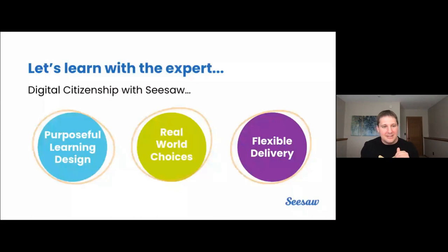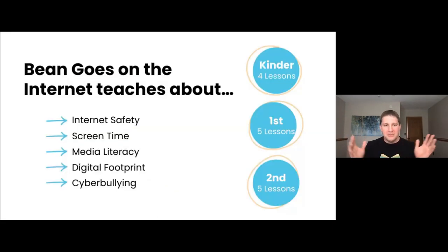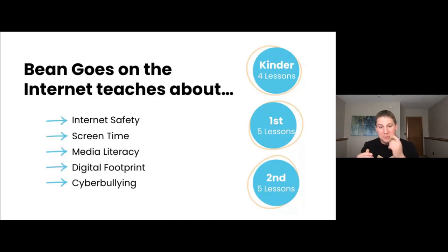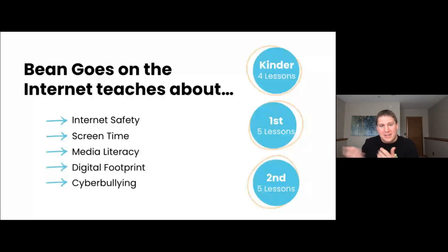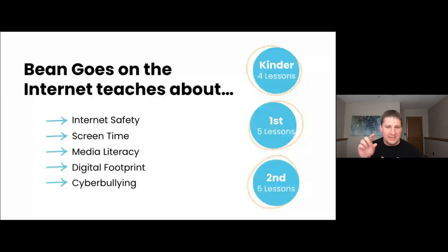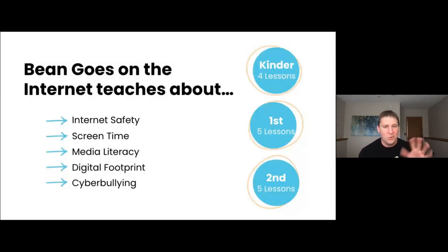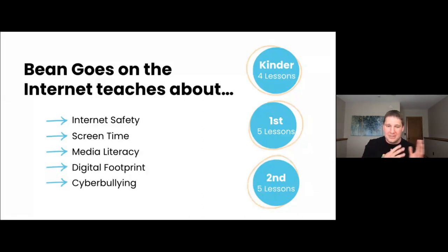Before we jump into looking exactly at the lessons, I want to give you a picture of what the whole scope is for this collection. Bean Goes on the Internet is a K-2 collection — K-2 students often don't get exposed to these computer literacy skills, but this is all purposefully designed to make sure that these students have the maximum capacity they can at that really young age. This is all aligned with CSTA, ISTE, and ELA standards, and it's designed to teach even those youngest learners digital citizenship skills. There are 14 core lessons built into this entire collection, spanning internet safety, screen time, media literacy, digital footprint, and even cyberbullying.